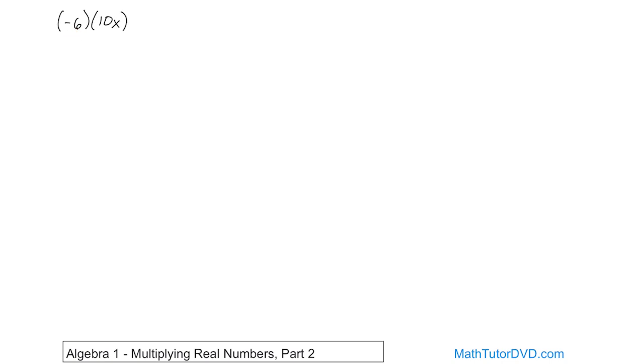And in this case, you have negative 6 times a positive 10x. Now this 10x really means 10 times x. We don't know what x is. It's not a number. And even though this section says multiplying real numbers, by now you should know in algebra that this x is just a placeholder for some unknown value.